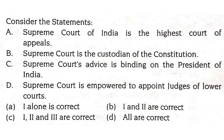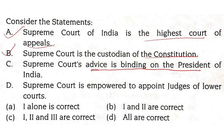Consider the following statements: Supreme Court of India is the highest court of appeals — correct. Supreme Court is the custodian of the constitution — also correct. Supreme Court's advice is binding on the President of India — this is not correct. The president can ask for the Supreme Court's advice, but the advice will not be binding upon the president. So only statements one and two are correct.